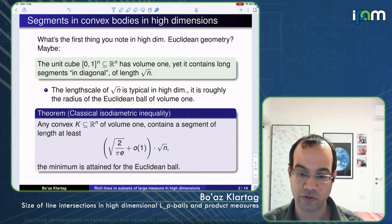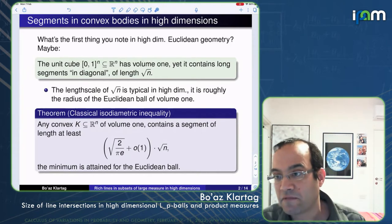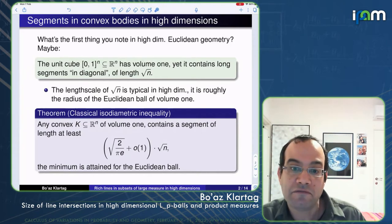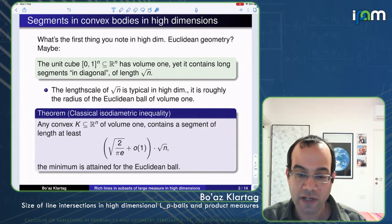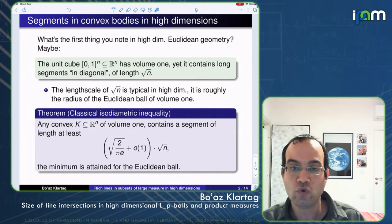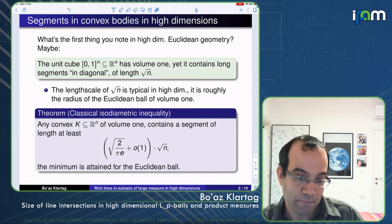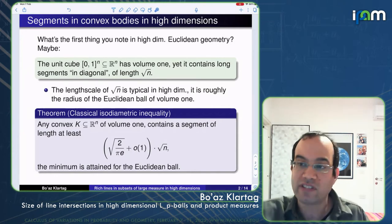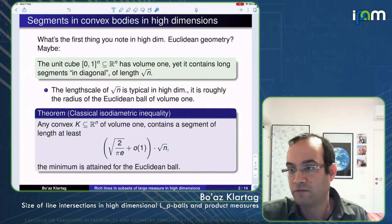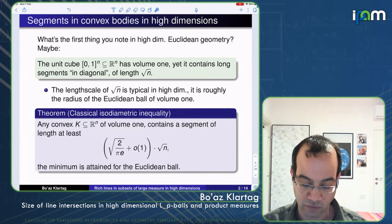The minimum is achieved by the Euclidean body. This is a basic property of high-dimensional geometry: if you normalize the volume to be one in a convex set, then you have long segments inside of length √n.